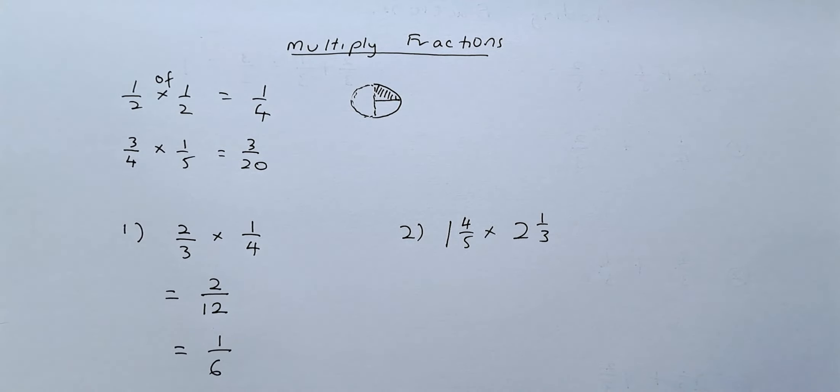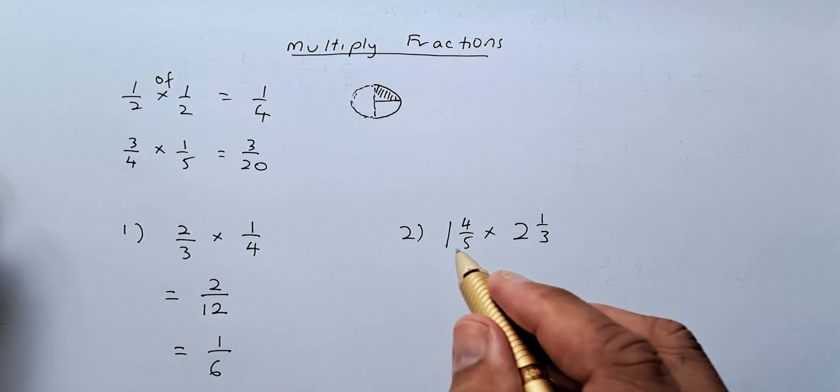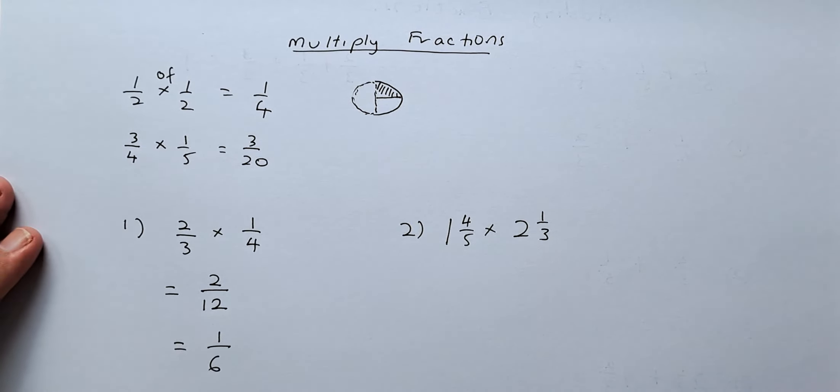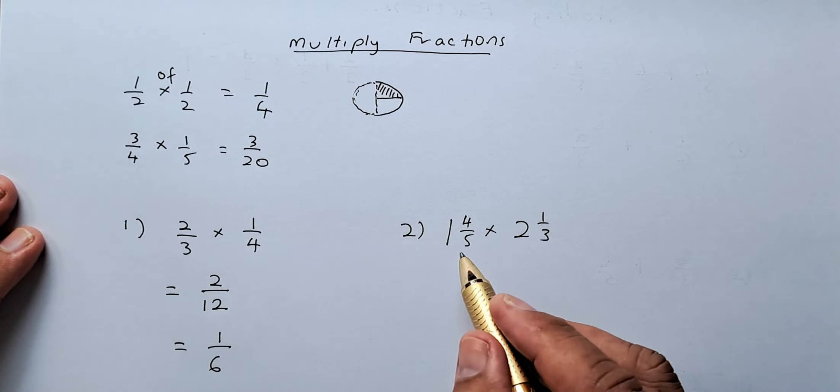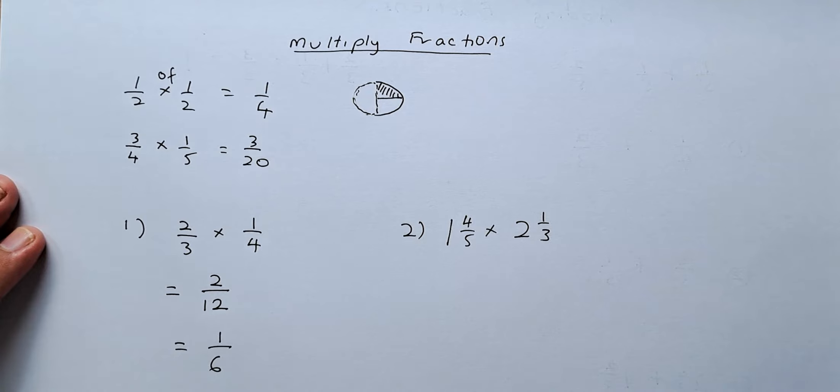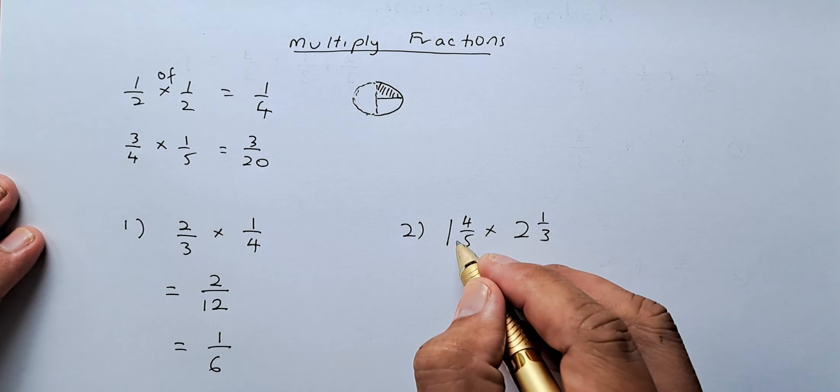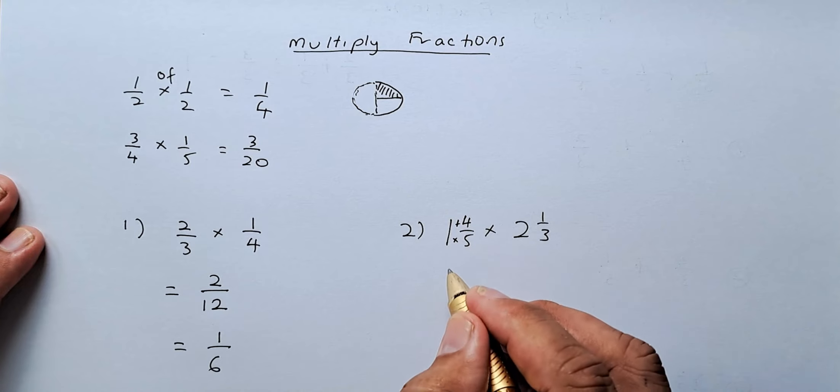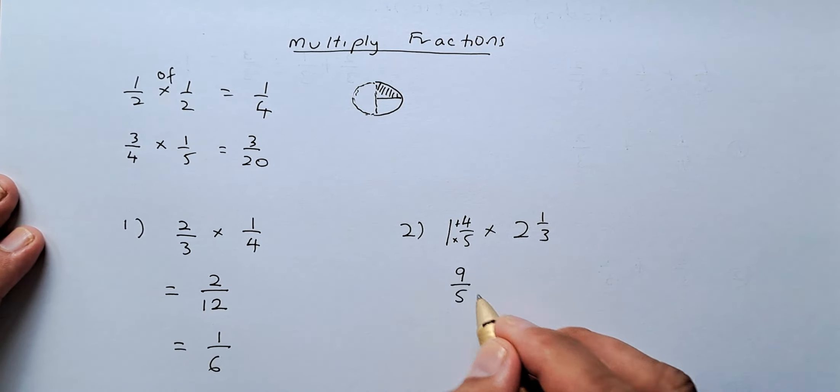Not so easy when it is in a mixed number form. Mixed number when you have 1 and 4 fifths multiplied by 2 and 1 third. Just like what we have done before, we have to convert these two numbers into improper fractions. To do that, you just take 5 multiplied by 1 plus 4. So 5 times 1 is 5 plus 4 is 9. So that becomes 9 over 5.